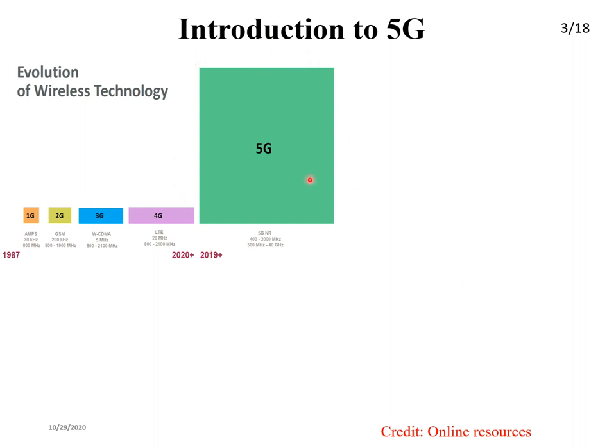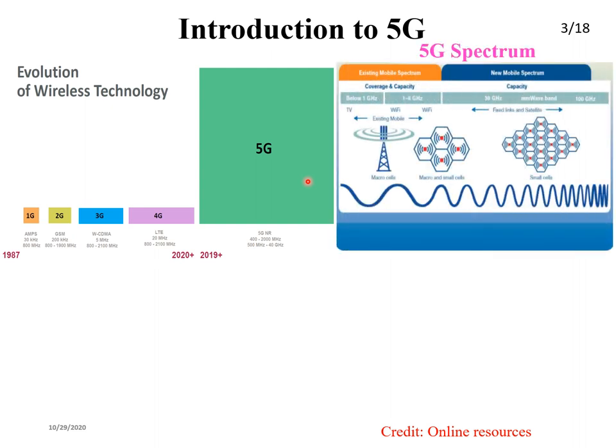5G brings a lot of changes: network function virtualization, network slicing, different frequency bands including sub-6 GHz and now also mmWave. Beamforming algorithms are introduced — coverage is no longer typical cell coverage but uses beamforming technology. 5G also allows adding any feature flexibly, whereas in 4G or below you had to change the entire network.